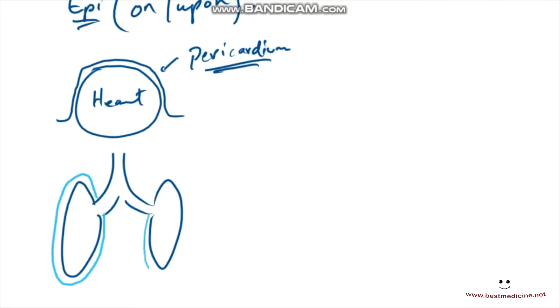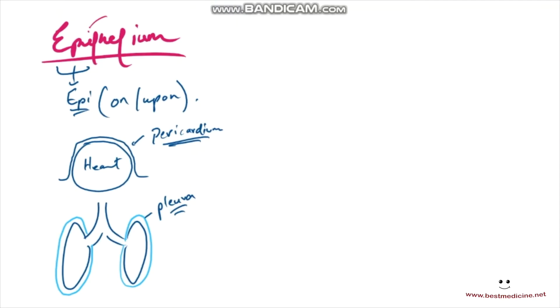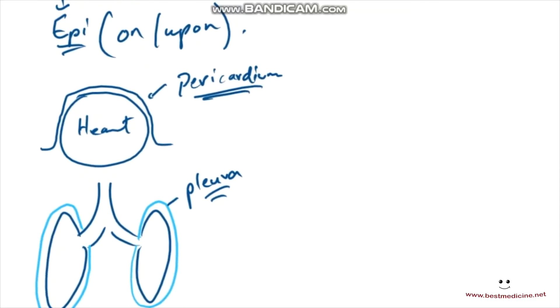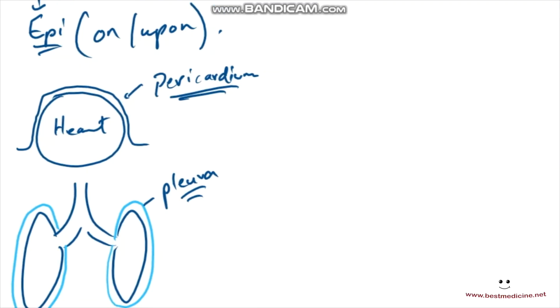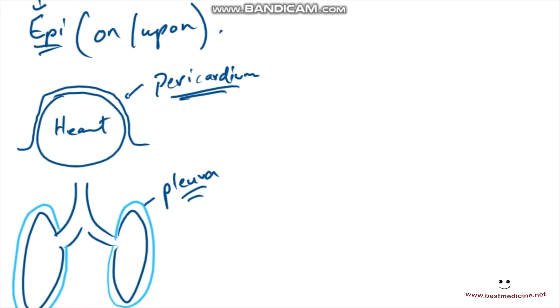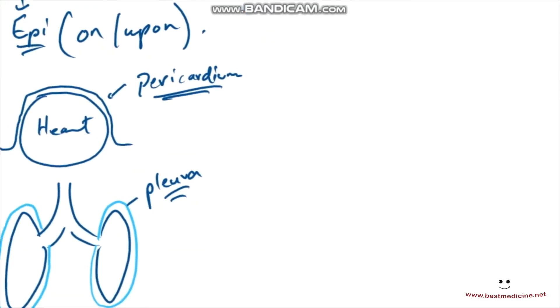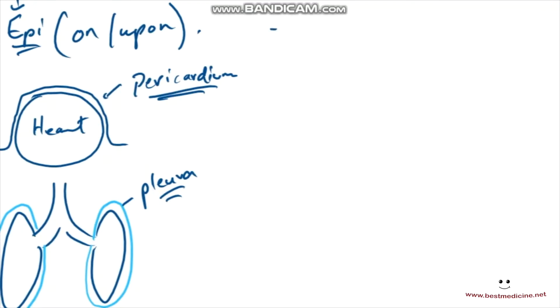This is the pleura, the pleural membrane. And pleural membrane is another example of epithelium that covers and performs the function of covering. It also helps prevent friction between the lungs as they contract and expand. So these are two examples of epithelium that perform the function of covering.